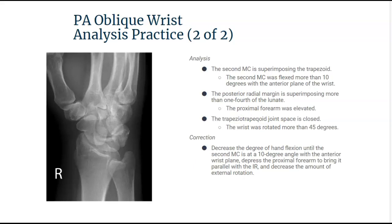In our second practice analysis, you can see that the metacarpals are once again superimposing each other. Looking at the trapezium, the relationship of the trapezium and trapezoid — their joint spaces are closed. We hardly even see the trapezoid and the capitate relationship. Everything is in external rotation; we are at more than 45 degrees in our obliquity.